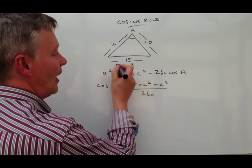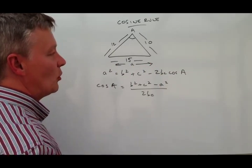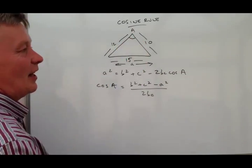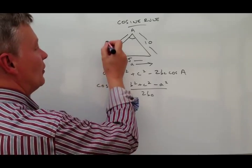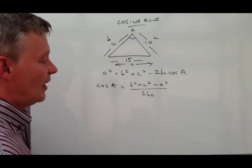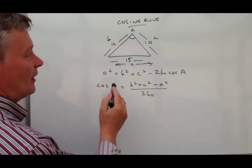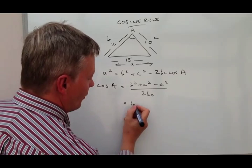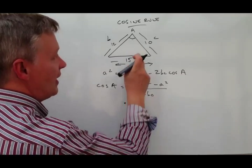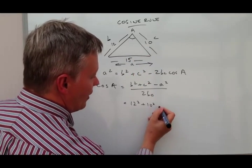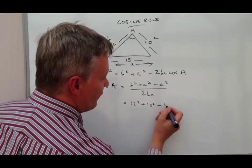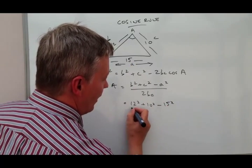Well, opposite capital A is small a, so this would be small a, and then either side of capital A I'm going to call it length b and length c. And then I just feed this information in, and I've got b which is 12 squared plus c which is 10 squared minus a which is 15 squared.